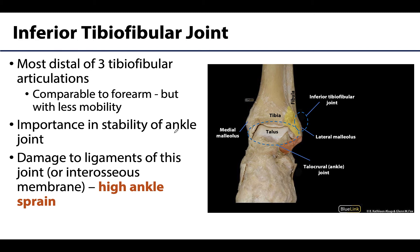We will start with the most proximal of these joints, the inferior tibiofibular joint, outlined here in a dashed line. The name is very descriptive — it is the most inferior of the three tibiofibular joints. There's a similar pattern to what we had in the forearm between the radius and ulna: a proximal joint, an interosseous membrane connecting the shafts, and then a distal joint. The largest difference is the degree of movement — where there was pronation and supination in the forearm, there's very little movement at the tibiofibular joints.